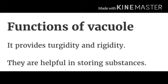Functions of vacuoles: they provide turgidity and rigidity to the cell; they are useful in storing substances. The sac-like structures present in the cytoplasm are called vacuoles. In plant cells, vacuoles are large; in animal cells, vacuoles are less frequent and smaller in size. Vacuoles store soluble food, waste, and secretions dissolved in water as cell sap.